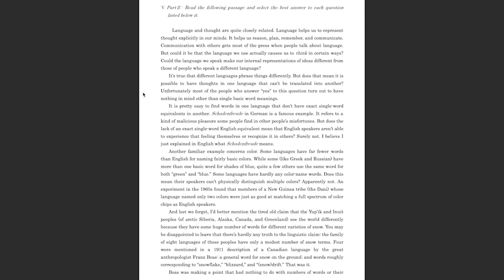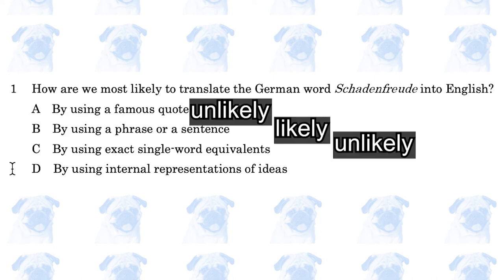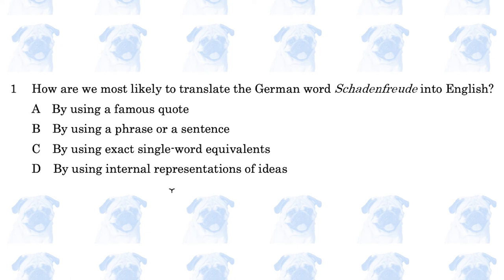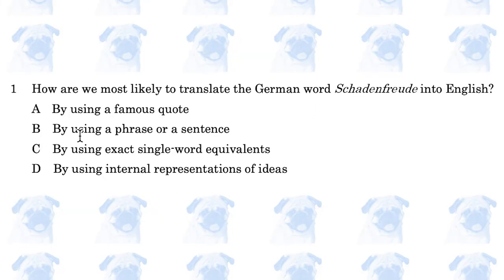Section 5, Part 2. Let's check the questions. Number 1: How are we most likely to translate the German word 'this' into English? A: by using a famous quote; B: by using a phrase or sentence; C: by using exact single word equivalents; D: by using internal representations of ideas. The passage states it is easy to find words in one language that don't have exact single word equivalents in another. The German word refers to a kind of malicious pleasure some people find in other people's misfortunes, and the passage explained its meaning by using a sentence — so the answer is B.